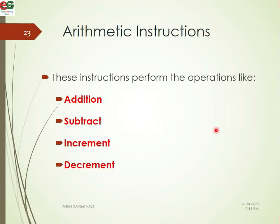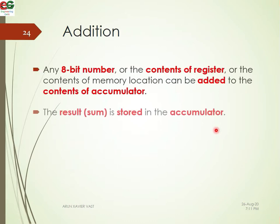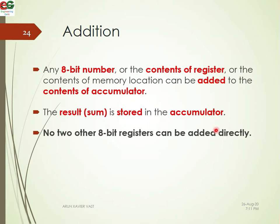The first type is mathematical instructions. We can perform addition, subtraction, increment and decrement. When we add two numbers, we can add any 8-bit number, or the content of the registers, or the content of memory locations can be added to the content of the accumulator. The result is stored in the accumulator.